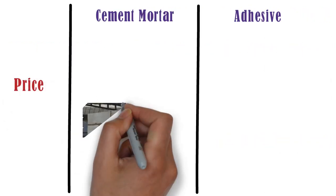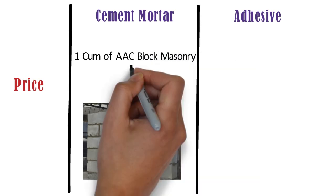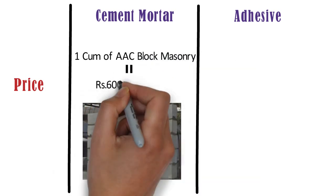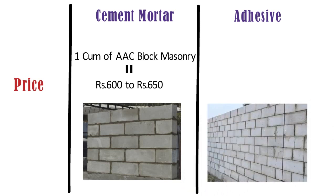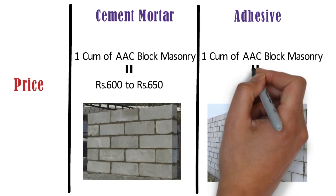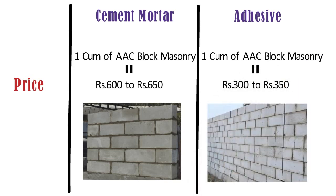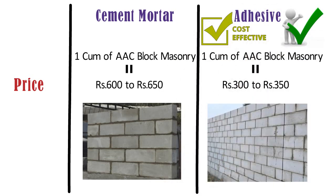Price. The cost of cement mortar for constructing 1 m³ of AAC block masonry is approximately 600-650 Rs. Whereas, the cost of adhesives for constructing 1 m³ of AAC block masonry is approximately 300-350 Rs. So, from this comparison we can say AAC block adhesives has many advantages and it is more cost-effective as compared to cement mortar. See you in the next video. Thanks for watching.